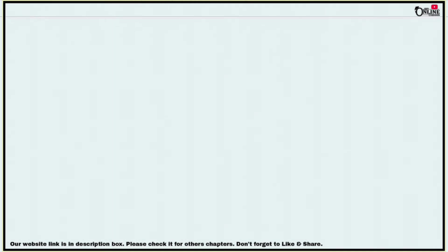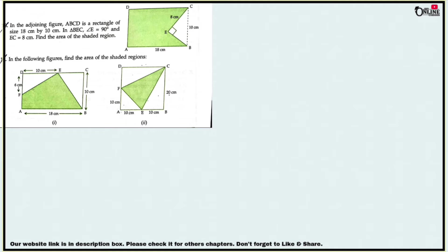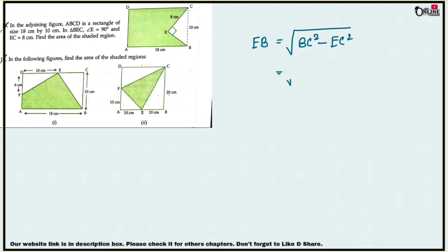Now sum number 10. In the adjoining figure, ABCD is a rectangle of size 18 centimeters by 10 centimeters. In triangle BEC, angle C equals 90 degrees, so BEC is a right angle triangle with EC equal to 8 centimeters. EB equals the square root of BC squared minus EC squared, which is the square root of 100 minus 64, giving EB equal to 6 centimeters.